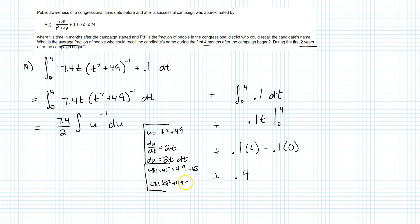So I'm going between 49 and 65 here, so let's actually do that. 7.4 divided by 2 is going to be 3.7, so I'm just simplifying the fraction. The antiderivative of u to the negative 1 is natural log absolute value of u, and we're going to evaluate this from 49 to 65. So 3.7 times ln of 65 minus ln of 49, and then I'm just going to put these two pieces together.